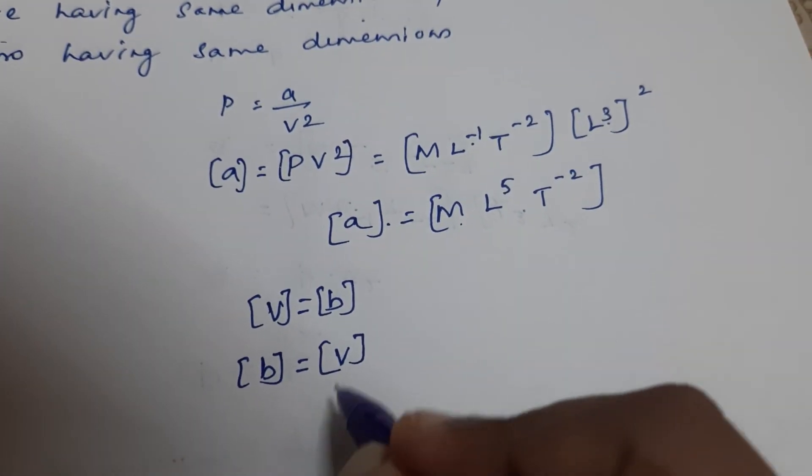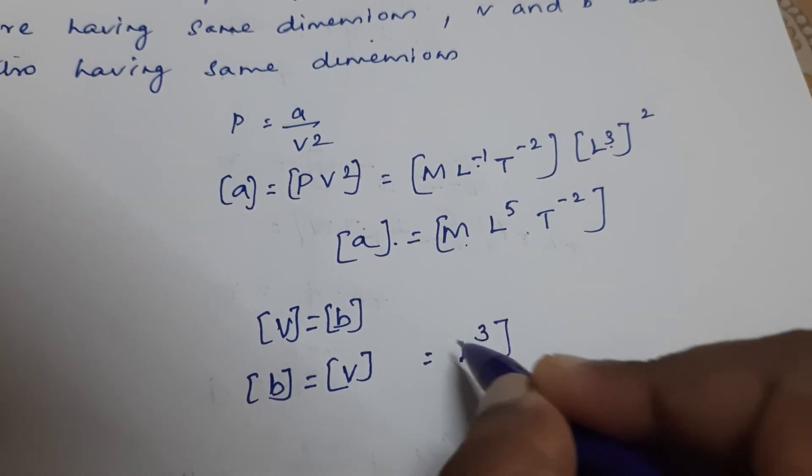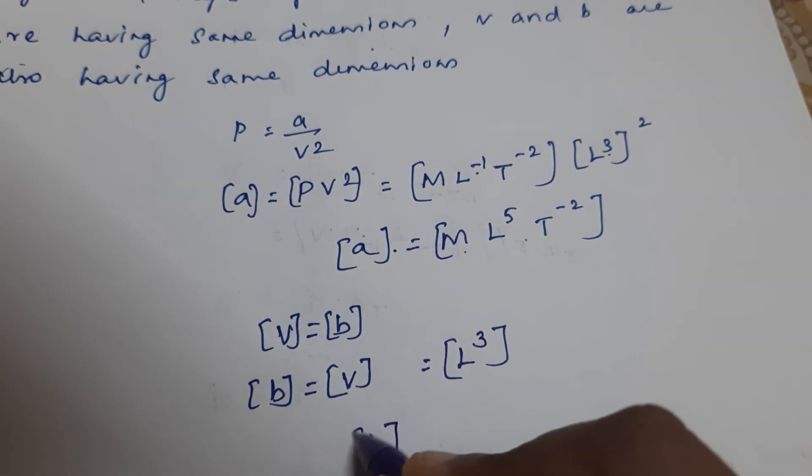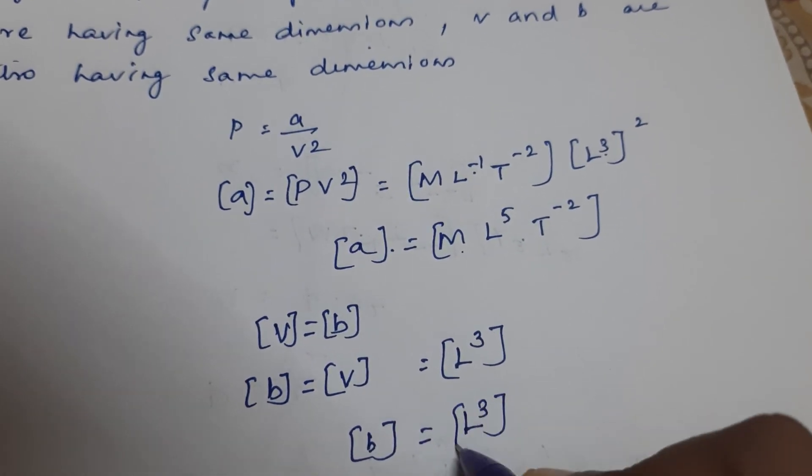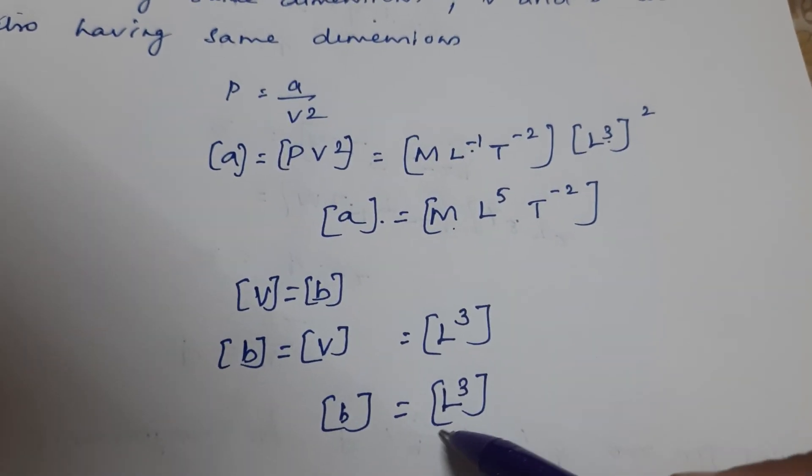Here V is volume. What is the dimension for volume? L³. So b is L³. Therefore, the dimension for a is M L⁵ T⁻², and b is L³.